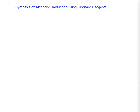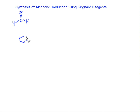Let's give an example. Let's take a simple carbonyl-containing compound — let's be very simple about it and take formaldehyde. And let's react it with a Grignard reagent. Let's take bromocyclohexane. We'll react it with magnesium solid to generate our Grignard reagent.